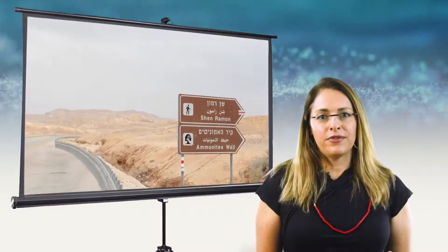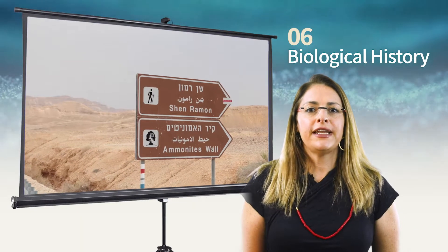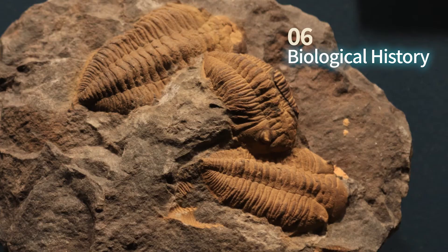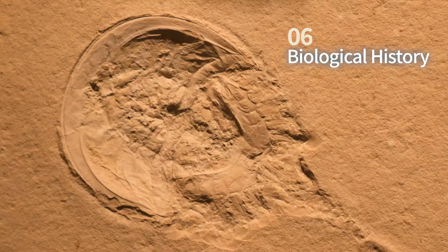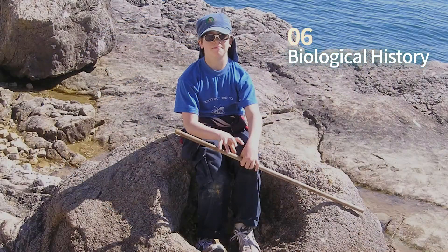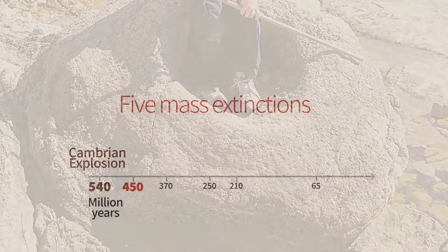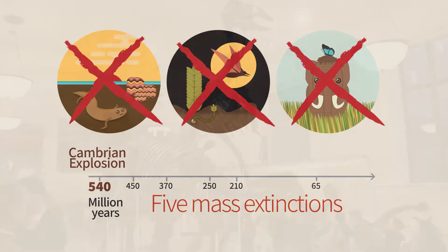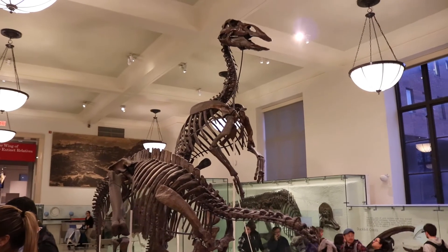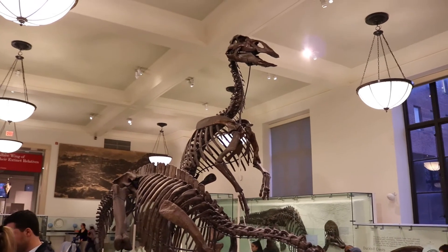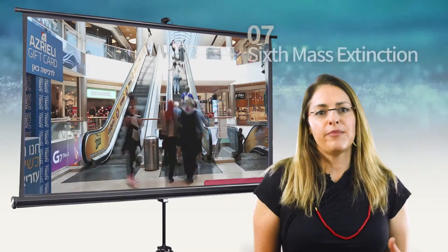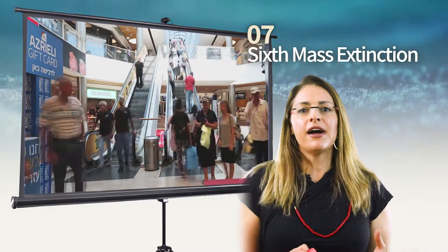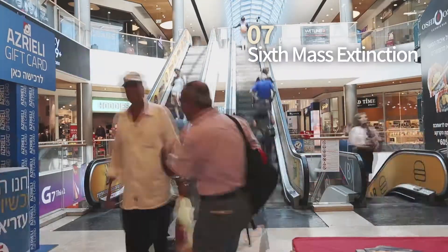After this tour through contemporary wildlife, the next video will take us on a short journey to the past. We will talk about how animals evolved since the Cambrian explosion half a billion years ago, and about the five mass extinctions that led up to modern life. We will see how they enabled the rise and fall of dinosaurs and the rise of mammals, and end by asking whether we are in the midst of a sixth man-made mass extinction.